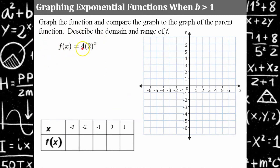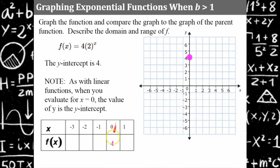We have the function 4 times 2 to the exponent x. We're going to graph this function, compare it to the parent function, describe the transformation, and describe the domain and range. The y-intercept has an x-coordinate of zero — evaluating for x equals 0, 2 to the zero is 1, and 4 times 1 is 4. So we graph the point (0, 4).